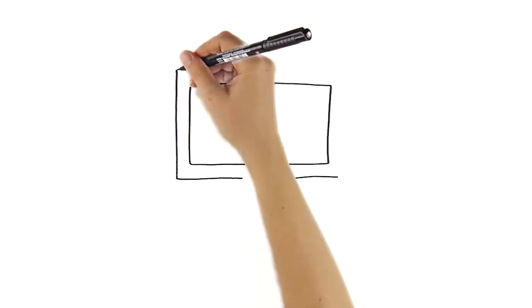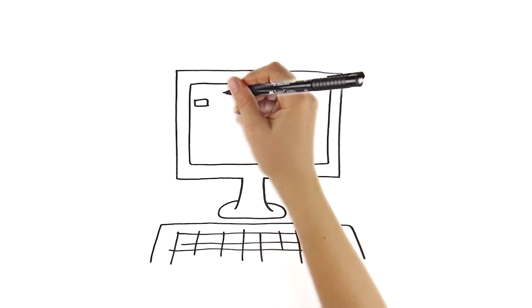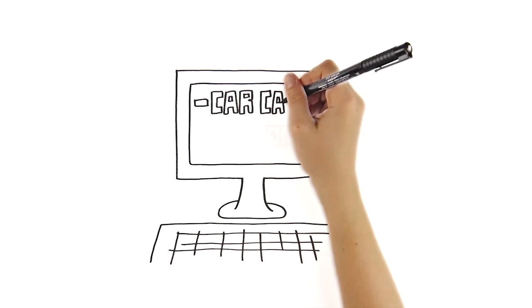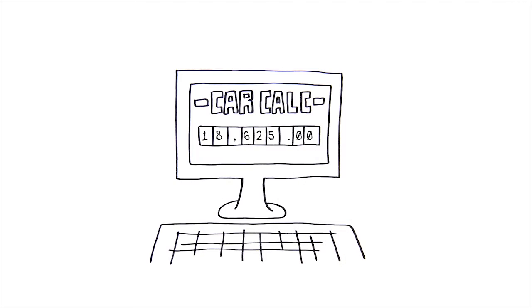Plug your ideal monthly payment into an online car buying calculator to find out how much of a car you can afford, taking projected trade-in value or down payment money into account. Compare that to the car you want by checking the Kelley Blue Book website or edmunds.com to see what the true retail cost is. Can you afford it?